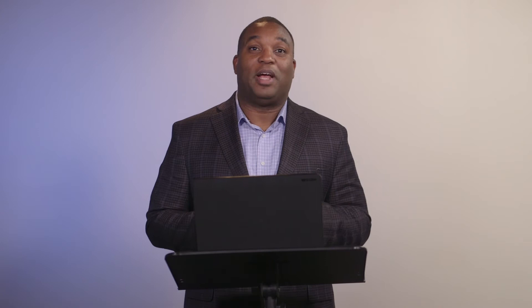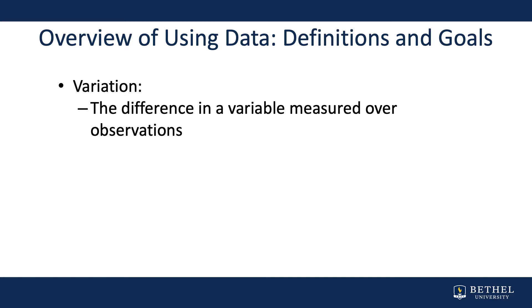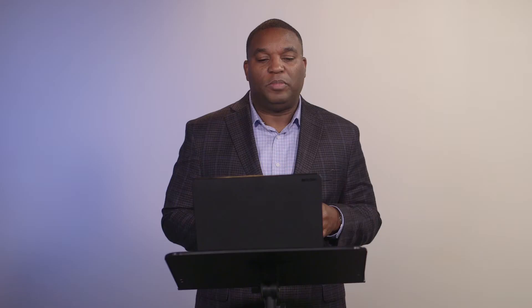There's variation in variables, which is the difference of the values measured over time. And then we have random variables or uncertain variables, where we don't know what they are at the time. These are all definitions of data that we have to know in order to move forward to descriptive statistics.